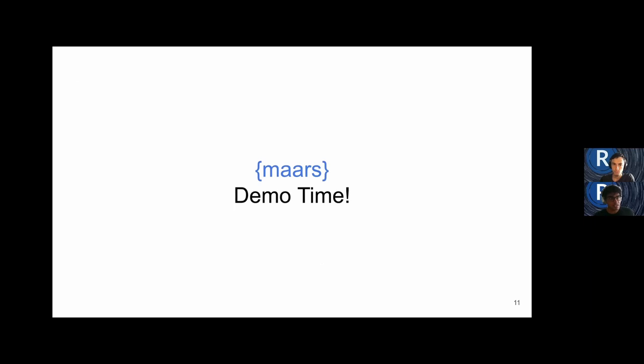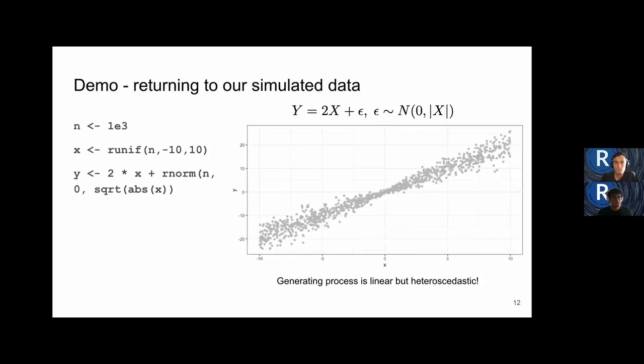We have discussed the key principles upon which MARS is based. It's now time to get hands on and see briefly what a MARS workflow looks like. To begin our demo, we will work in a simulated setting. Recall the simple toy simulated example that Ricardo presented earlier. Here, we generate data from a linear model with heteroscedastic noise, where the variance is not equal. For interest, on the left is what the R code used to generate this type of plot looks like.